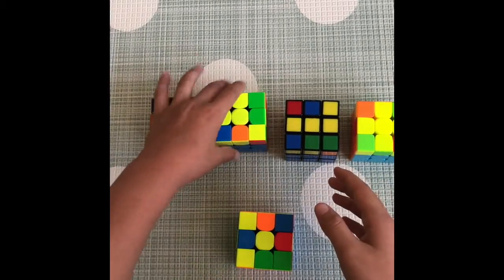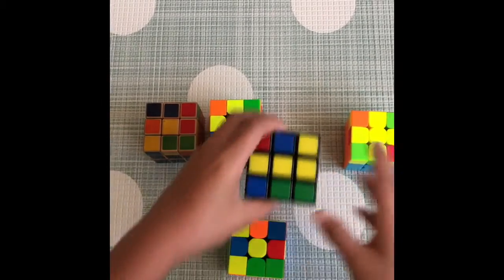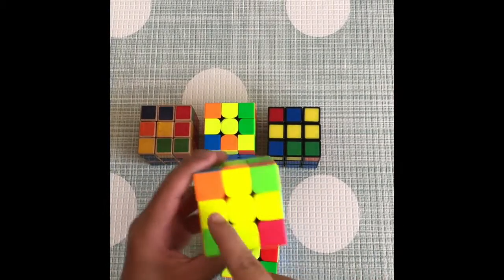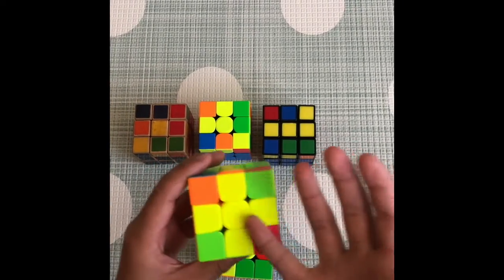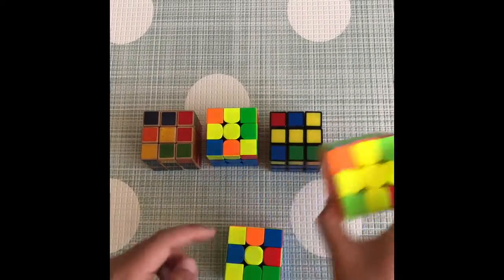The third stage is if you have this line. The fourth and final stage is if you have this cross, which means your cube is already solved. The yellow cross is already solved.